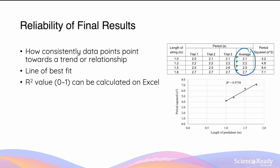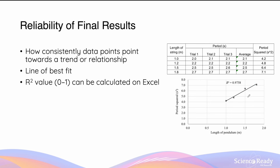But what about the average values, which are my final results? When I plot this on a graph of period squared (T²) versus the length of pendulum, I can draw a line of best fit to represent the linear relationship between T² and L. The reliability of final results refers to how consistently my average data points point towards a general trend or relationship — graphically, how close my four average values are to the line of best fit. If the four data points are collinear, they are highly reliable. In this case, the four data points are still pretty close to the line, so these results are still considered highly reliable.